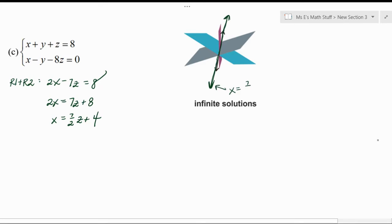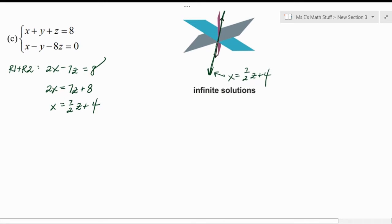Okay, so our answer is basically something that is saying this, therefore there are infinitely many solutions. And you always want to basically define where the solutions are. So the infinitely many solutions are basically any point that lie on the line x equals 7/2 z plus 4.